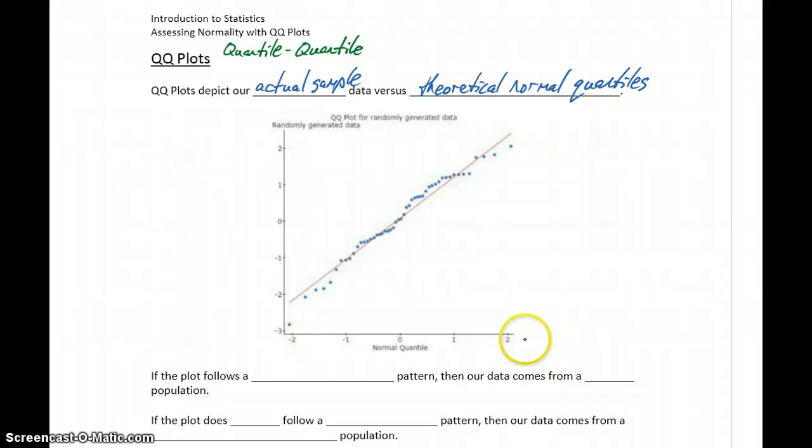So along the x-axis here, we'll have the theoretical normal quantiles. And then along the y-axis, we'll have our sample data. So we'll see these points that are generated by comparing those two different values, our quantiles with our sample data. And there will be in red a line of best fit that's coming up with the best approximation of that straight line pattern.